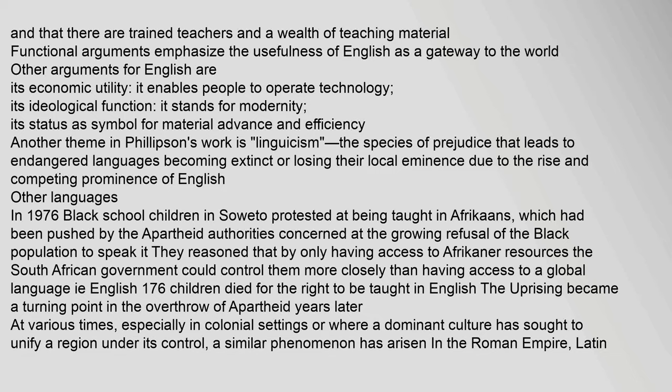In 1976, Black school children in Soweto protested at being taught in Afrikaans, which had been pushed by the apartheid authorities concerned at the growing refusal of the Black population to speak it. They reasoned that by only having access to Afrikaner resources, the South African government could control them more closely than if they had access to a global language — i.e., English. 176 children died for the right to be taught in English. The uprising became a turning point in the overthrow of apartheid.